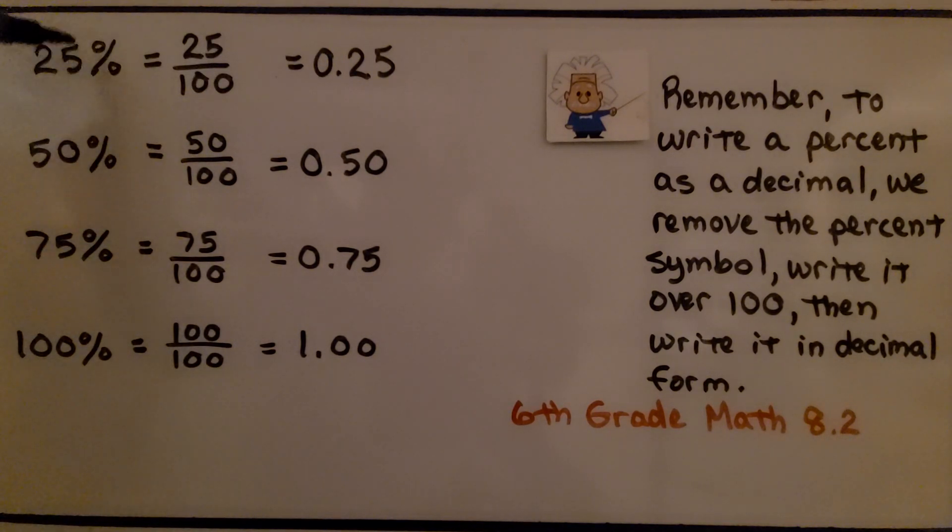So 25%, we take away the percent sign, and percent means per 100, so we have 25 per 100. That's 25 hundredths, which is 0.25. And we can do that for any percentage. 100% would be 100 over 100. That would be one whole.